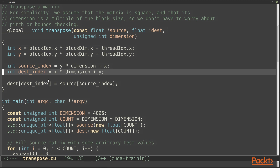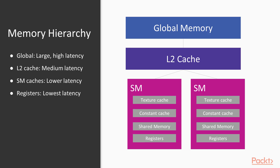Each block is reading from a square section of the input and writing to a square section of the output. If we could just rearrange which threads are writing where within each block, everything could coalesce. And that's where shared memory comes in. We've looked at this memory hierarchy diagram a couple of times already, but there's one box we haven't talked about yet, and that's shared memory. Like the texture and constant caches, it resides on the SM.